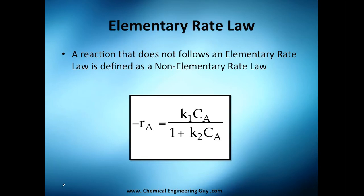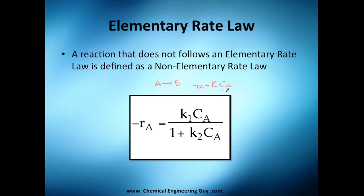We were talking about the non-elementary rate laws, which are the ones that don't follow the elementary rate law. For example, if you got A turning into B, one would probably say the rate of reaction of A is the constant times its concentration, but as you can see it's not only that — you have this large expression dividing, and that's when we say this is a non-elementary rate law.